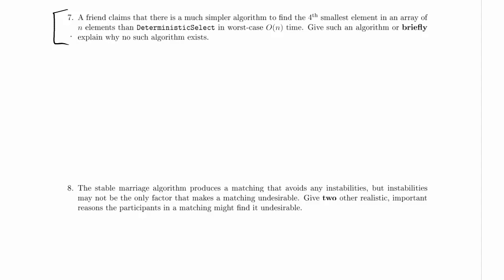So we're supposed to find the fourth smallest element in an array of n elements and we're supposed to do it way better than deterministic select in worst-case linear time.